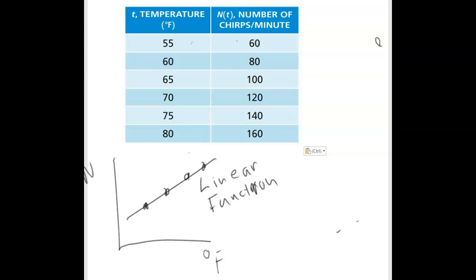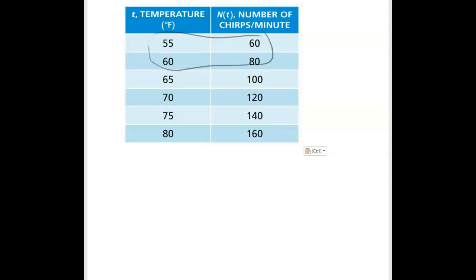What I'm going to do is calculate the slope between a couple more pairs of points and see if I consistently get the number 4. I did these two points already. Let me try these two points. I'll do 160 minus 140 on the top. That means I'll do 80 minus 75 on the bottom.